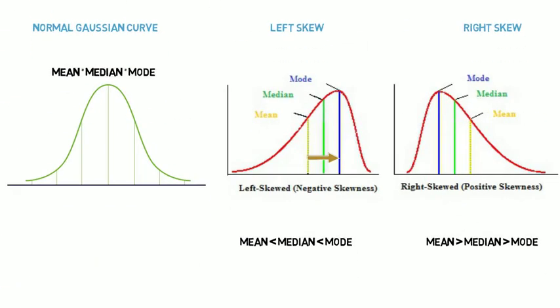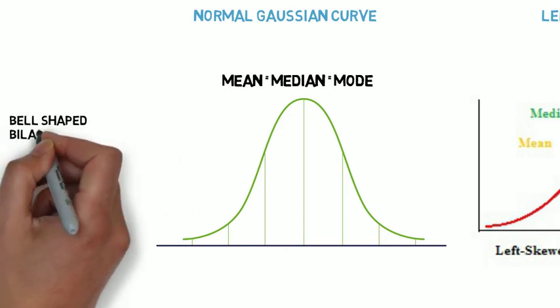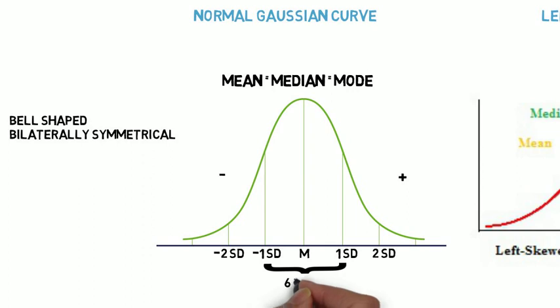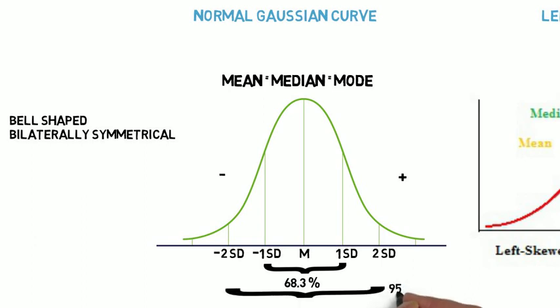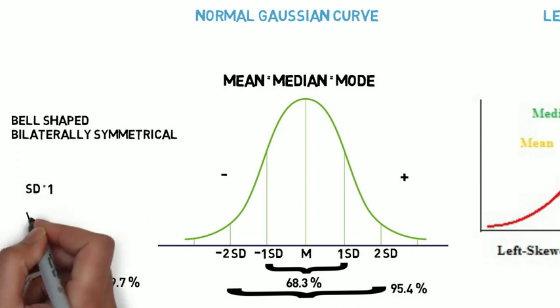Now, we come to distribution. A normal Gaussian curve is simple and symmetric — this is the point where mean, median and mode coincide. Considering the positive and negative sides of the curve, mean plus or minus 1 standard deviation covers 68.3% of the values, mean plus or minus 2 standard deviations covers 95.4%, and mean plus or minus 3 standard deviations covers 99.7% of the curve. In a standard normal Gaussian curve, the standard deviation is 1 and the variance is also 1.